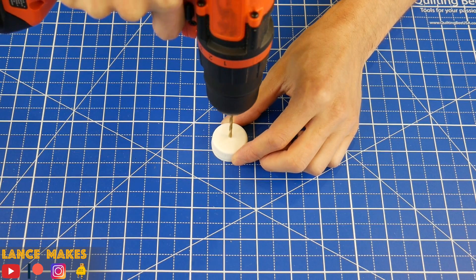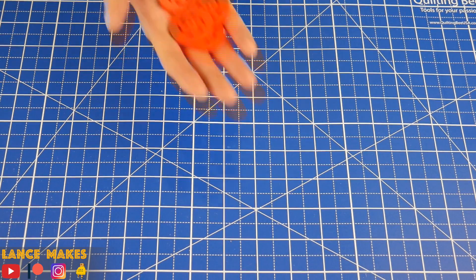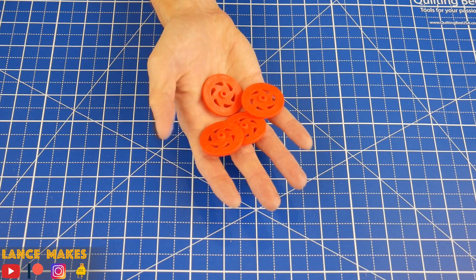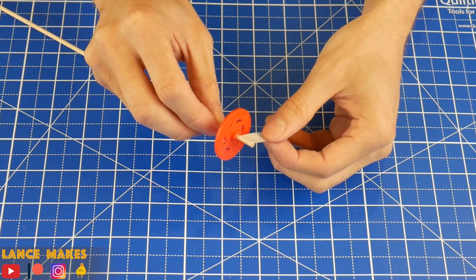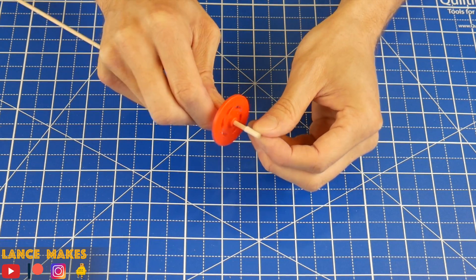Now for the wheels. You can drill a hole into bottle caps, but I prefer using these plastic wheels that I found online. Fit the dowel into the wheel, and if it's sliding off, wrap a small piece of tape around the end.